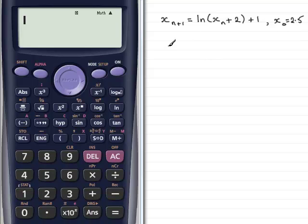So, to find out the next term in the sequence, x_1, what I need to do is set n equal to 0. If I set n equal to 0, that will give me x_1, and that would be equal to the natural log of x_0, x_0 plus 2, plus 1.